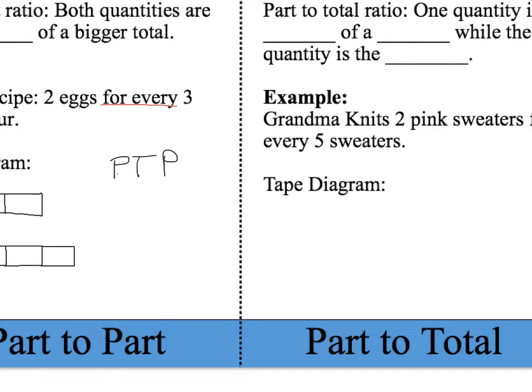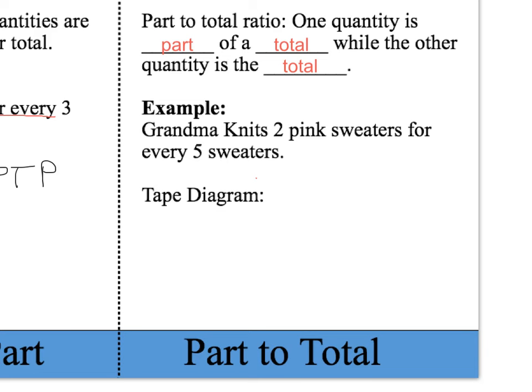For a part-to-total ratio, one quantity is part of the total while the other quantity is the total. For example: Grandma knits two pink sweaters for every five sweaters. The pink sweaters are part of the five sweaters, making this a part-to-total ratio because the pink sweaters are part of the total amount of sweaters.